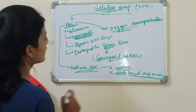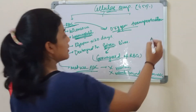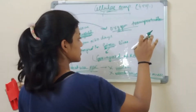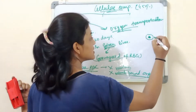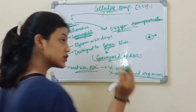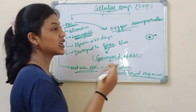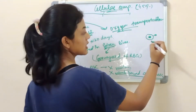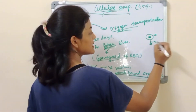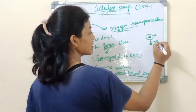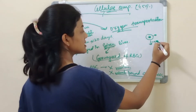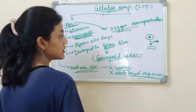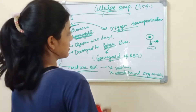When an RBC has a nucleus, it is not a mature RBC. Actually, when an RBC is maturing, at early stages it has a nucleus, but the nucleus is then ejected — removed — and then the mature RBC is formed.